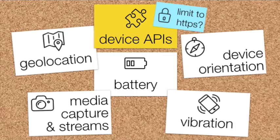There is talk of limiting these APIs, because they're fairly privacy-sensitive. Geolocation is obvious; device orientation is also privacy-sensitive because it could be used to track whether you're moving or standing. WebRTC, of course, as well. There are voices saying these APIs should be limited to HTTPS only, which is probably a good idea. We might see these APIs moving to be only available on HTTPS-enabled sites.